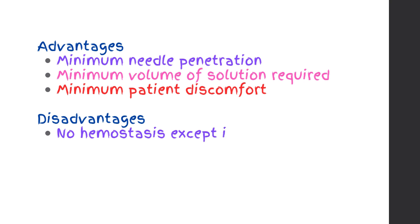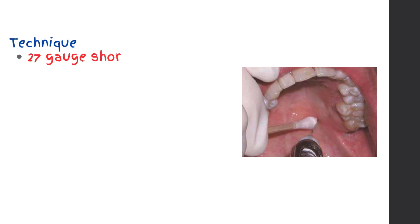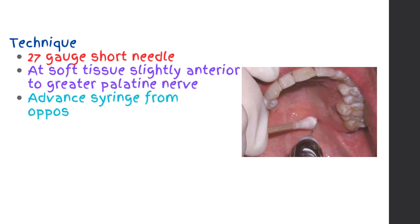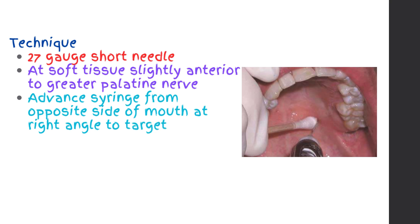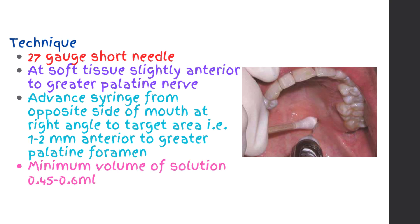Disadvantages: no hemostasis except in the immediate area of injection; potentially traumatic. Technique: 27 gauge short needle, at soft tissue slightly anterior to the greater palatine foramen. Advance syringe from the opposite side of the mouth at right angle to target area, 1 to 2 millimeters anterior to the greater palatine foramen. Minimum volume of solution: 0.45 to 0.6 milliliters.